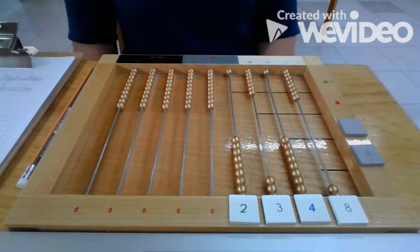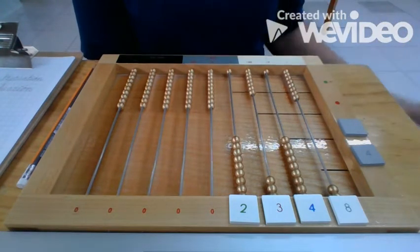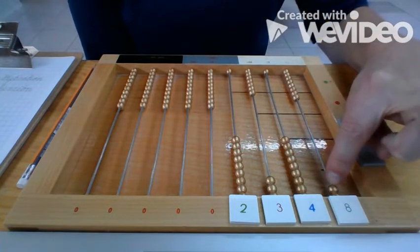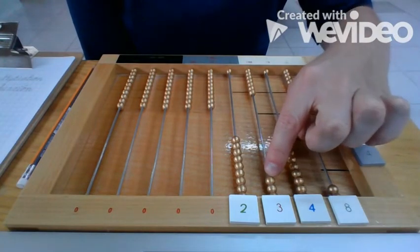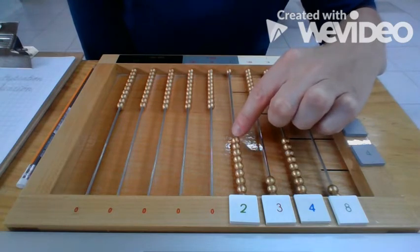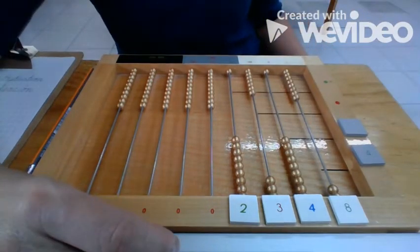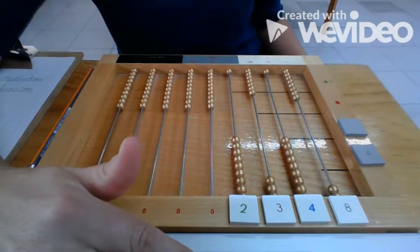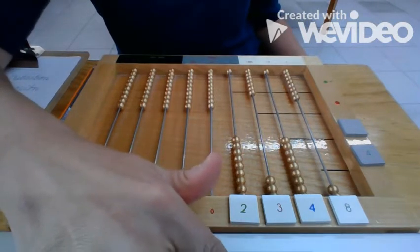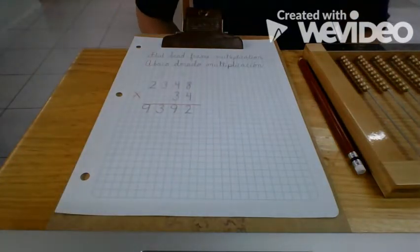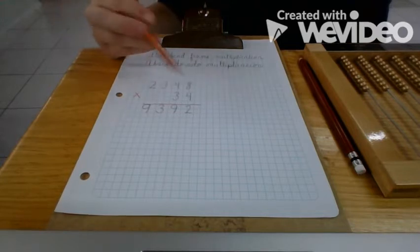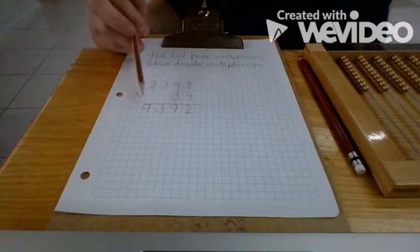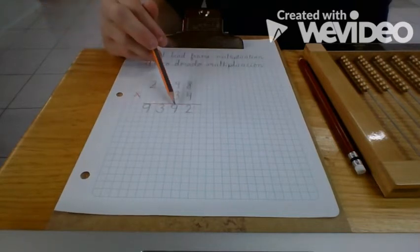I have finished multiplying by the units of our multiplier. We have two ones, nine tens, three hundreds, and nine thousands. I'm going to write that down on my paper — it's my first partial product. So we have found our first partial product: 2348 multiplied by four gives us nine thousand three hundred ninety-two.